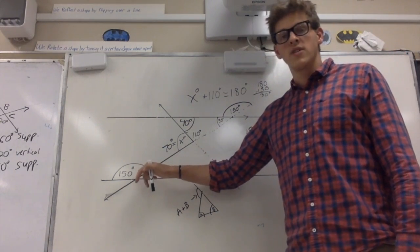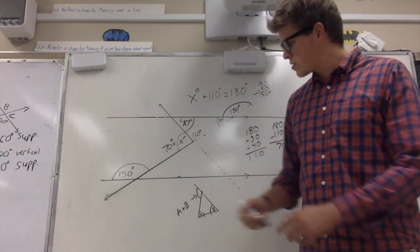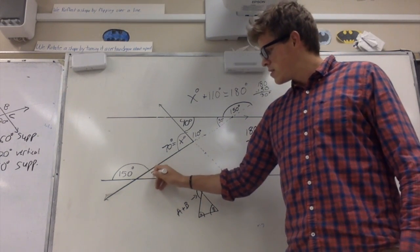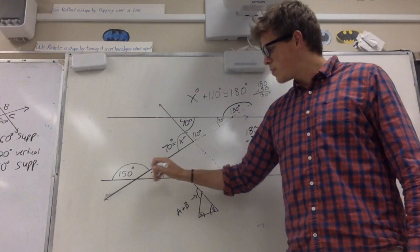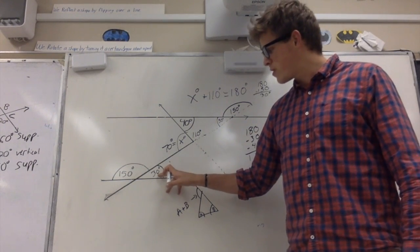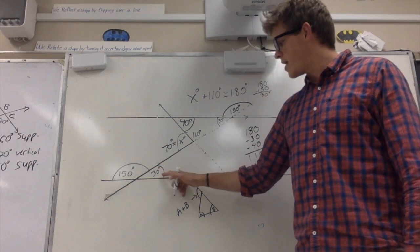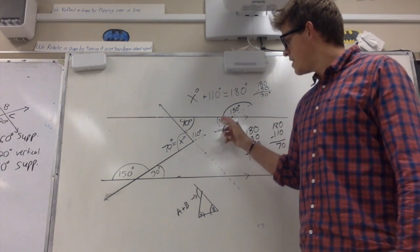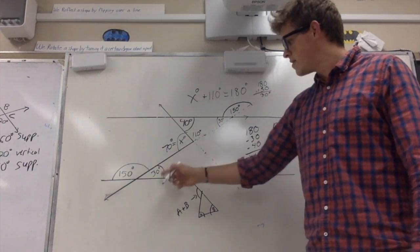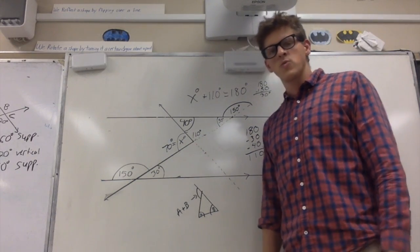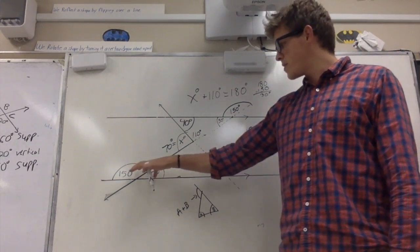The other thing we could have done here was realize that this was 30 degrees right here, because 150 plus something equals 180 here. So this would be 180, and then we could have done alternate interior angles right here. So all we needed was one angle relationship to get from here to here.